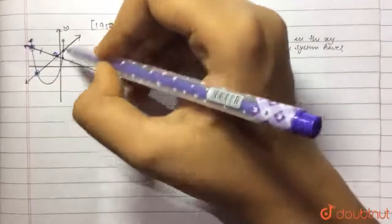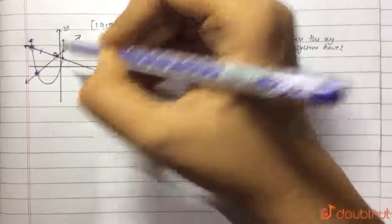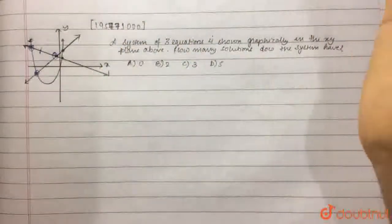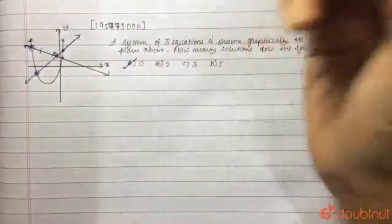Here, the two lines coincide, the parabola is left out and here, the same thing happens. So there are no solutions for this system. So option A is the correct answer.